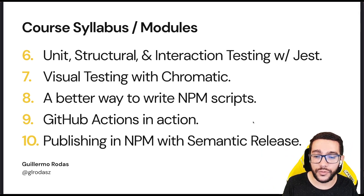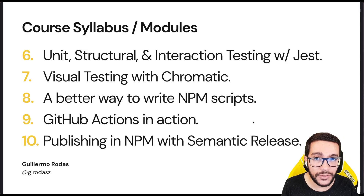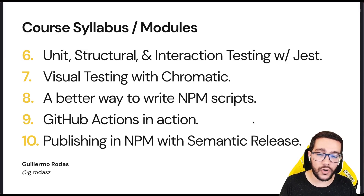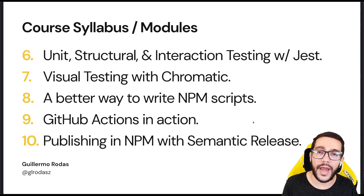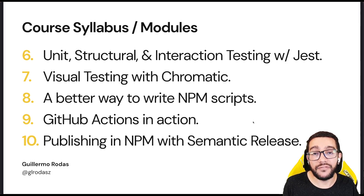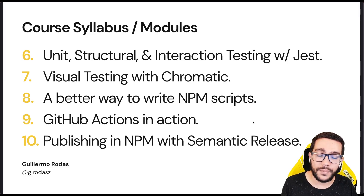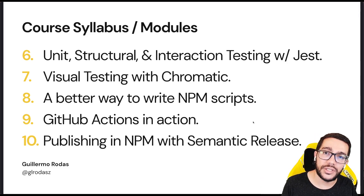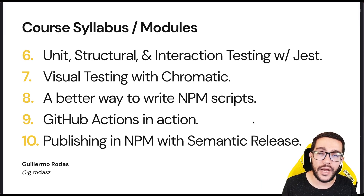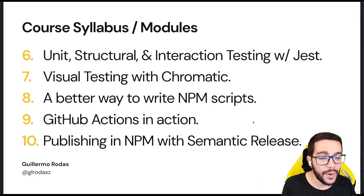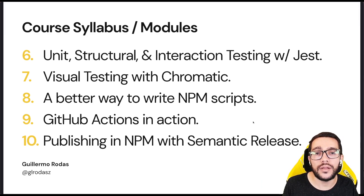We are going to use those scripts in a continuous integration environment. In this case, we are going to use GitHub Actions, but of course this will work for any environment like Jenkins. And finally, in the tenth module, we will be publishing our component library to NPM using a package called SemanticRelease, which will make for a better experience for you or your team.